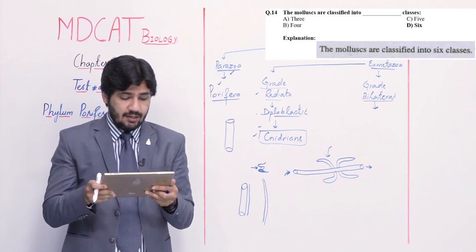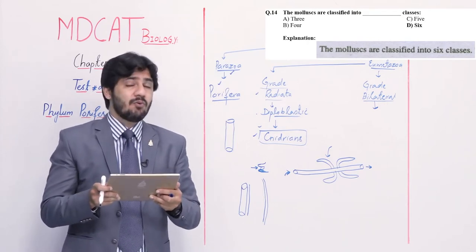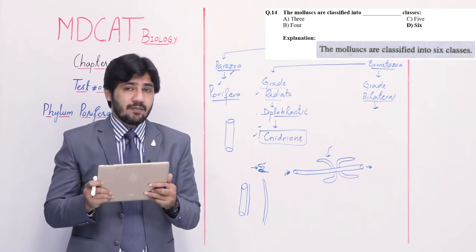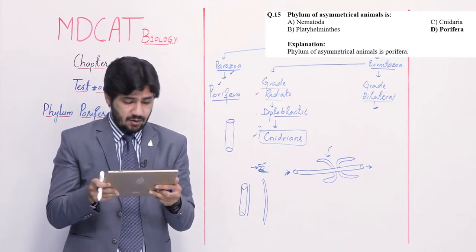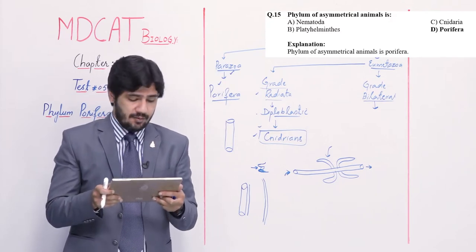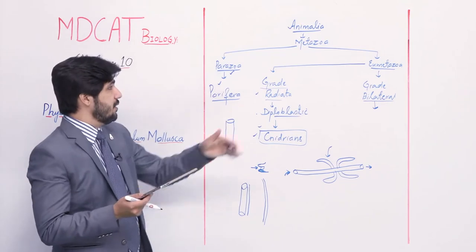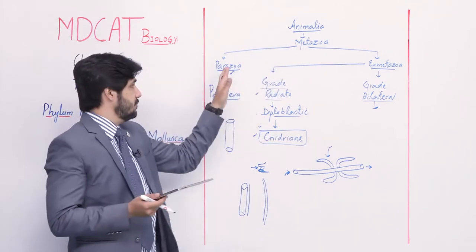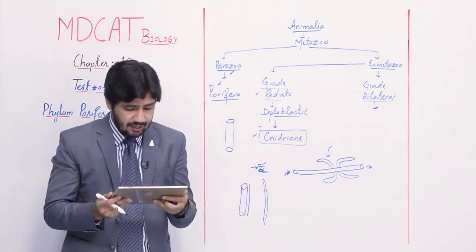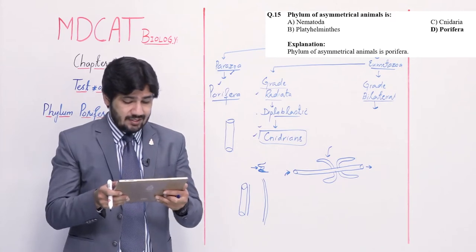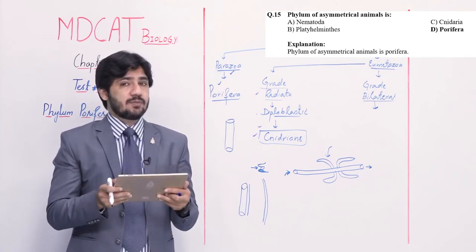Question number 14: molluscs are classified into — alpha 3, beta 4, charlie 5, delta 6 classes. Molluscs are majorly classified into 6 classes, though the textbook gives 3. Right option is delta — 6. Question number 15: the phylum of asymmetrical animals is — alpha nematoda, beta Platyhelminthes, charlie Nideria, delta Porifera. Asymmetrical animals are Parazoa and the only phylum is Porifera. Nematodes, Platyhelminthes, and Nidarians have body symmetry — Nidarians have radial, nematodes and Platyhelminthes have bilateral. Right option is delta — Porifera.